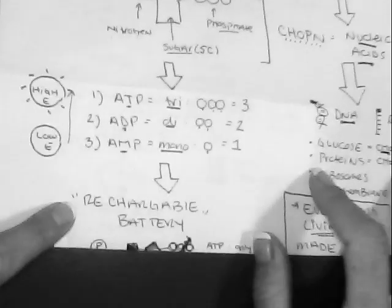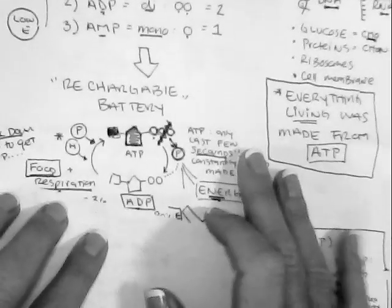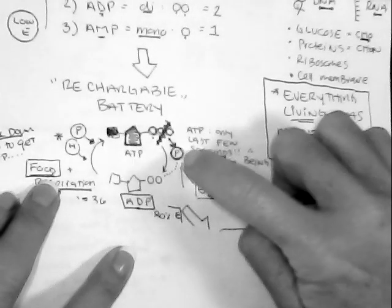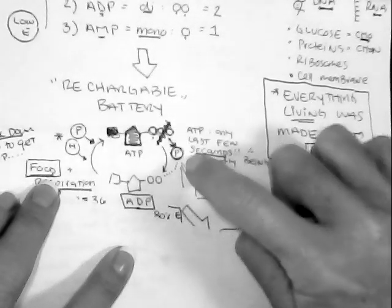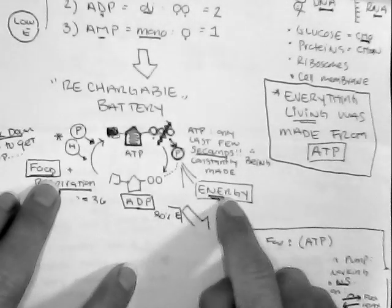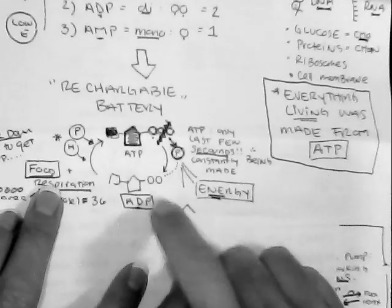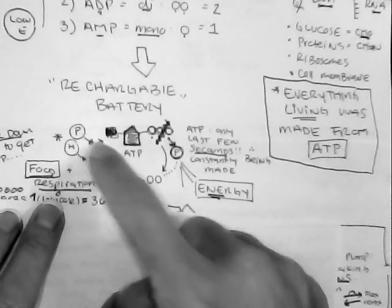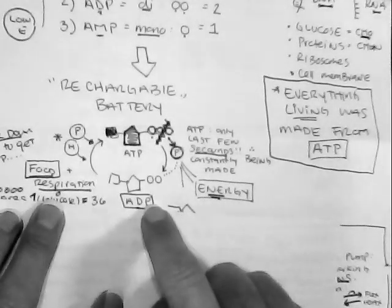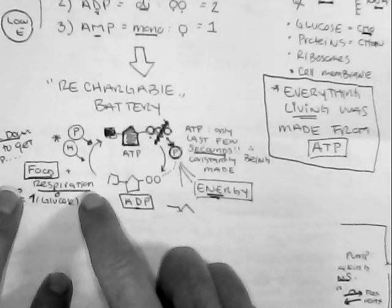Now ATP is also referred to as a rechargeable battery. So let's talk about how it's actually rechargeable. ATP goes through this very simple cycle. So in order to actually create energy, we're going to rip off this phosphate and it only lasts for a few seconds. And that ripping off or breaking the chemical bonds creates that energy. And that in turn creates what's known as ADP. So we only have two left. In order to put the phosphate back on to this ADP to remake our fully charged battery here, we're going to need some type of food or respiration.